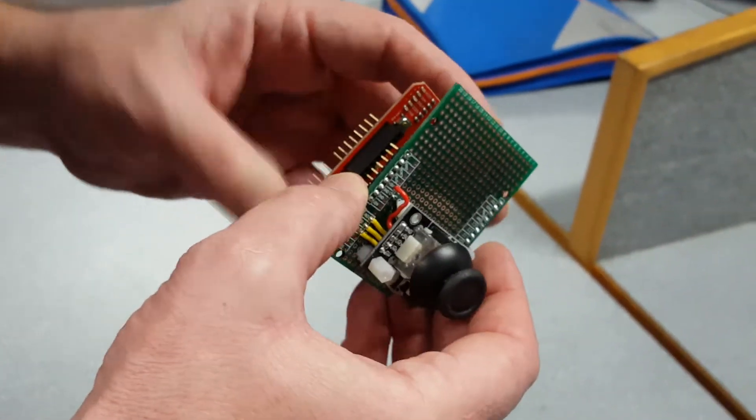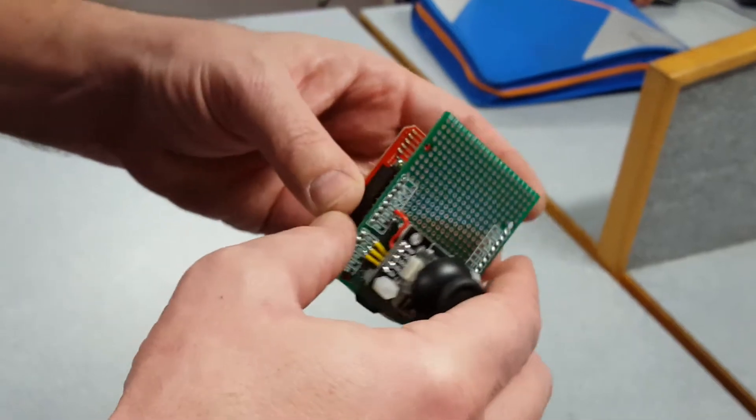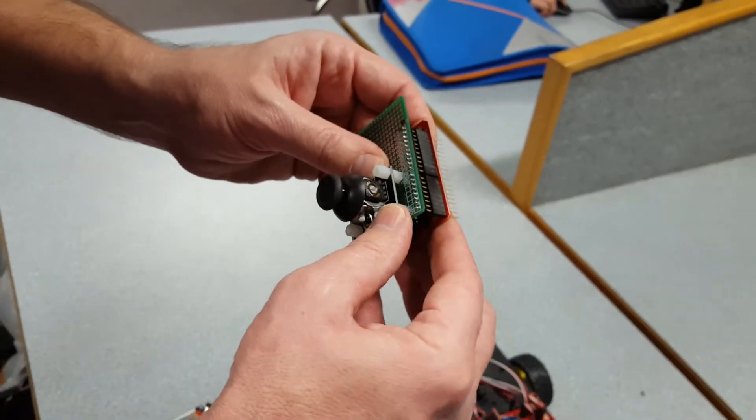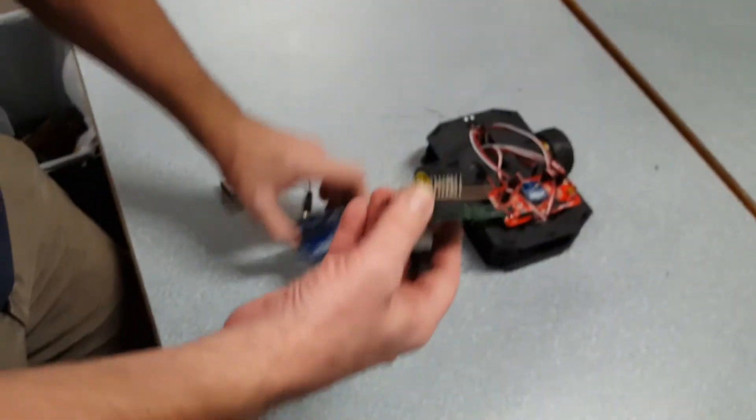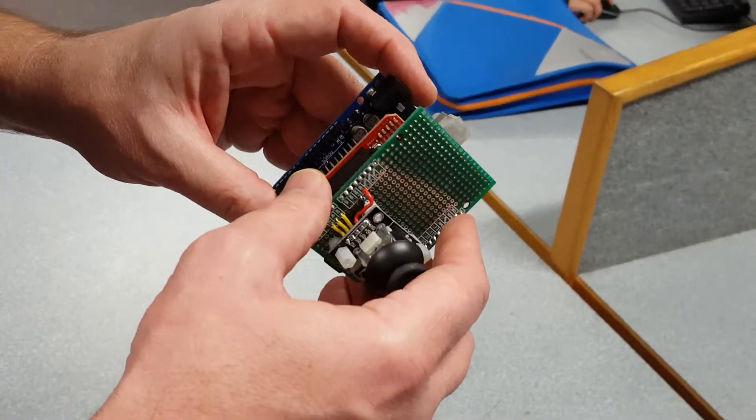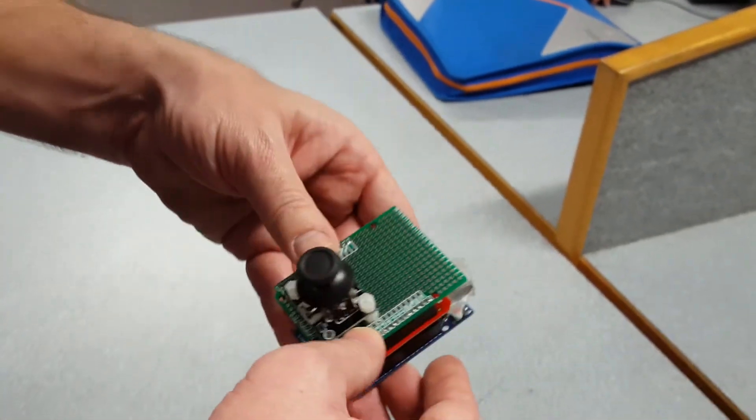We mount it here on top of the XB wireless shield. Press that in place. And let's pop that here on the Arduino that's running our program.